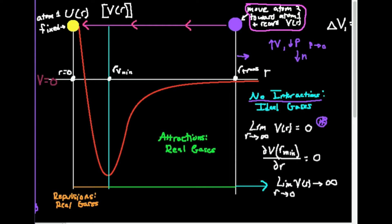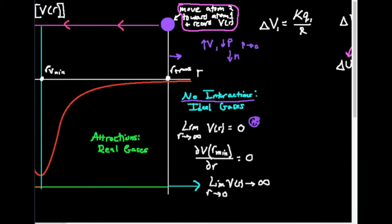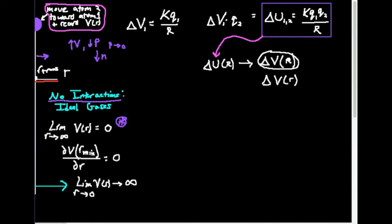As I bring these atoms closer together, look at what's happening to this red curve — it's going more and more into the negative potential energy side. Going back to this equation, what is negative potential energy? When can it be negative? Can r be negative? No, radius can never be negative. Coulomb's constant is about 9 times 10 to the 9th — that's always positive.